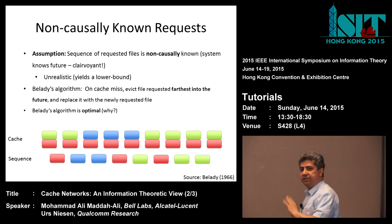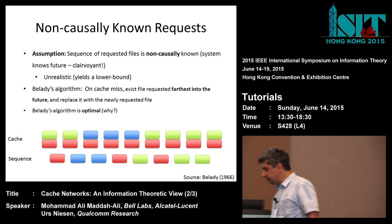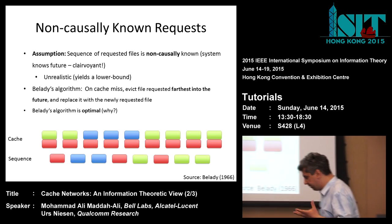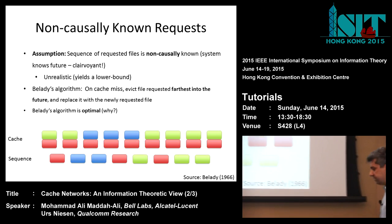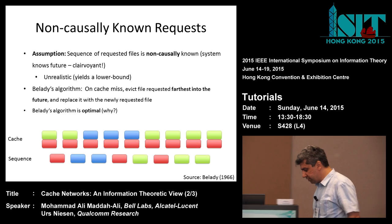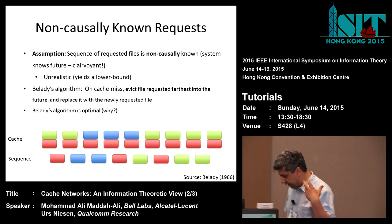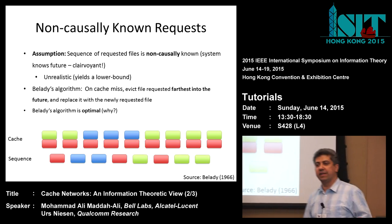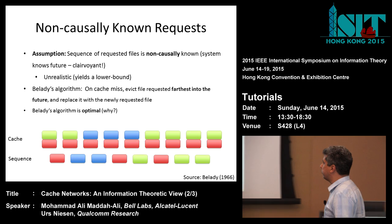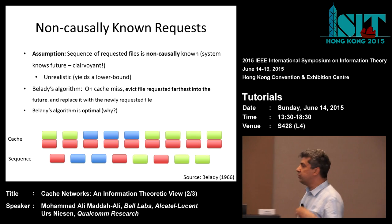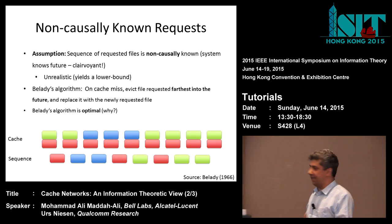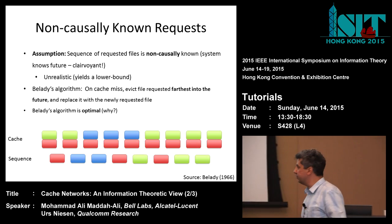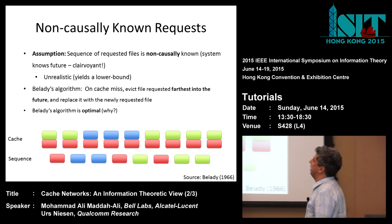This algorithm is optimum. We cannot explain the optimality proof here — it is long. There are various ways to prove it based on dynamic programming or combinatorial approaches. I just want to give some feeling for why the intuitive idea we might think is optimal is actually not optimal.